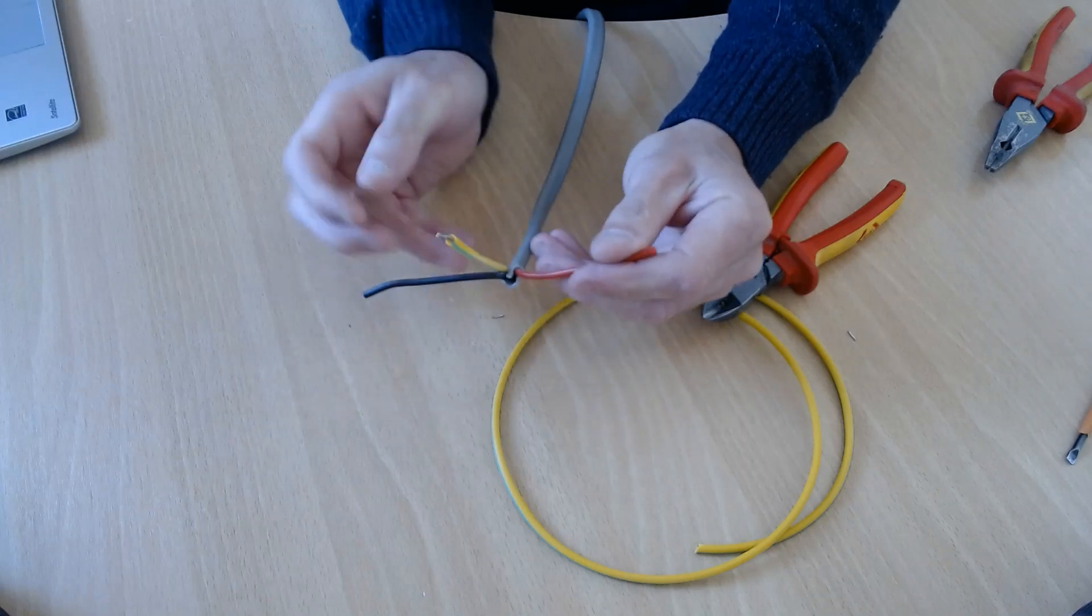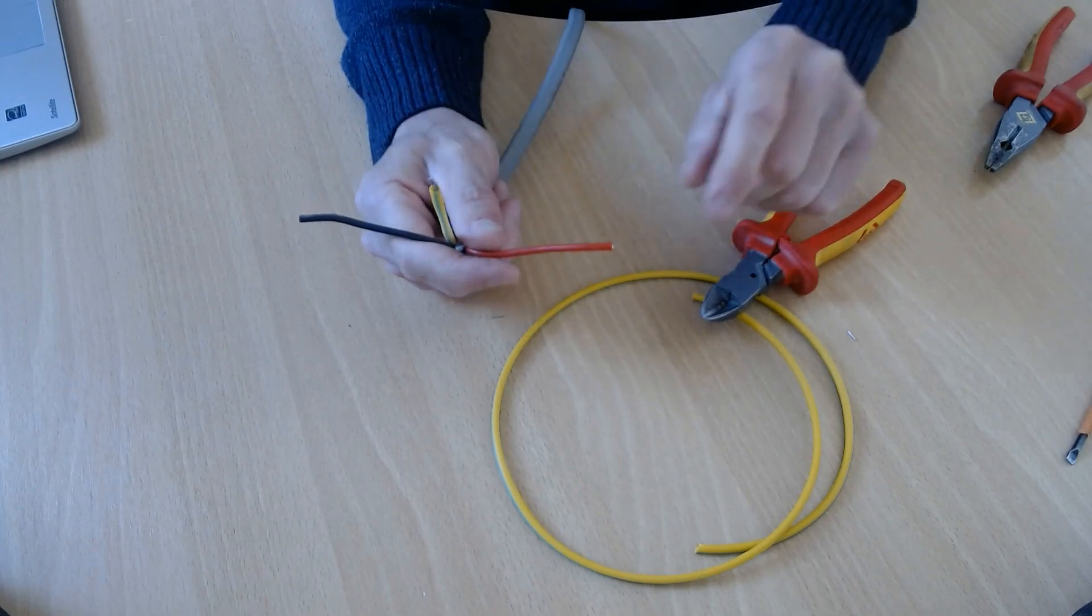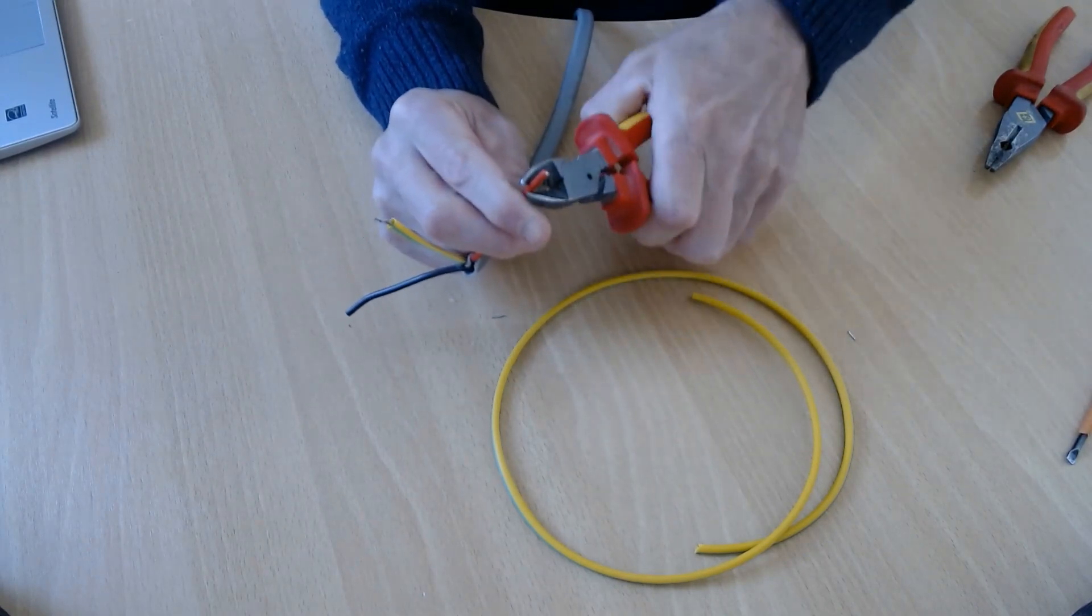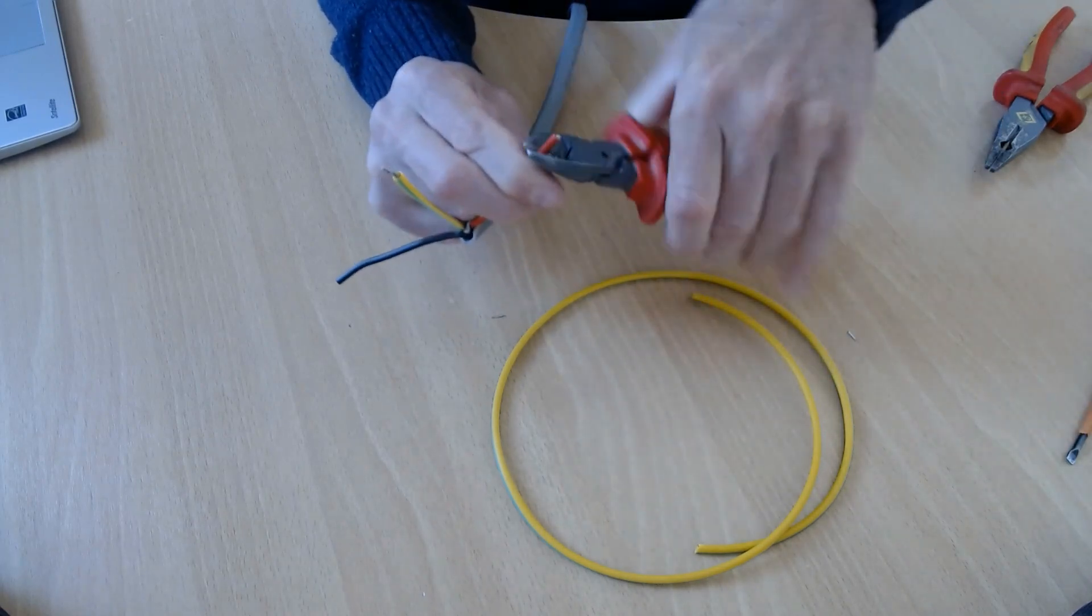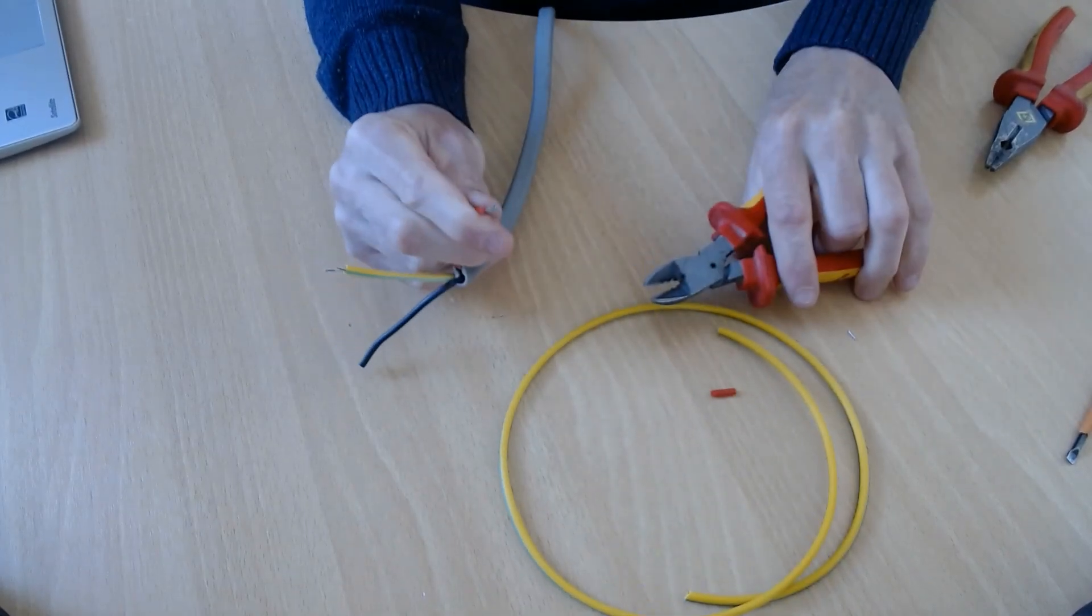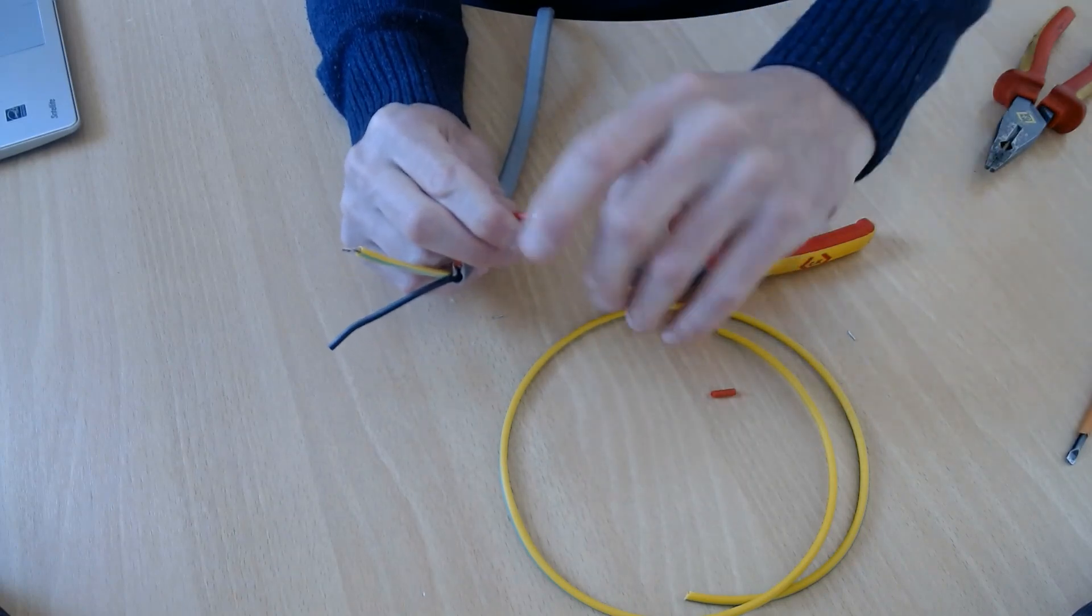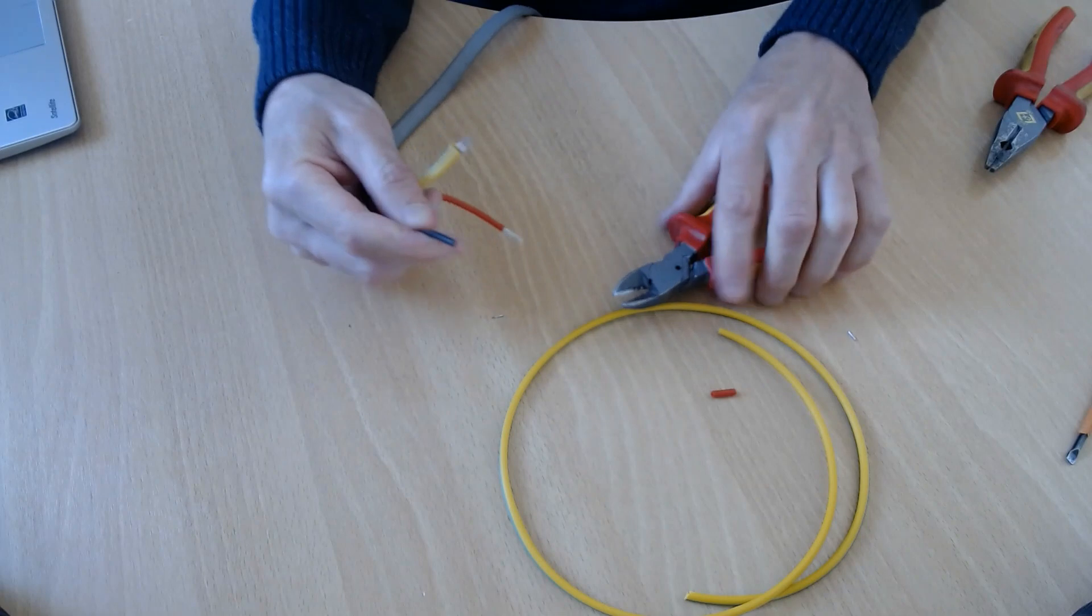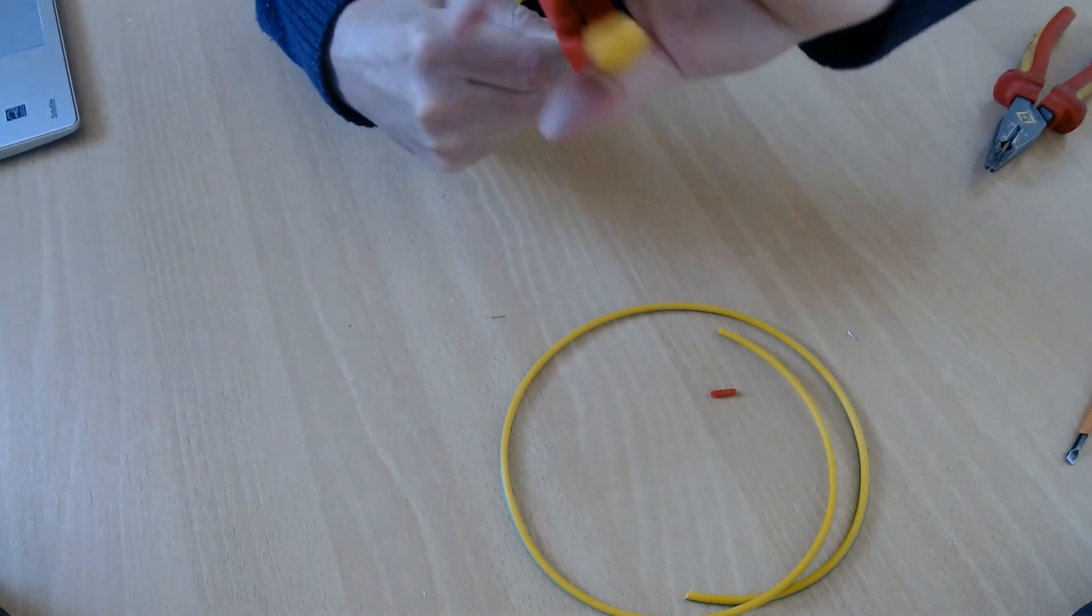Then you've got your live and your neutral. Get the cutters and you twist lightly with the cutters. You don't go too hard. Keep doing this until you can pull that like that. Then twist them. Do the same with the neutral.